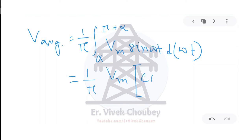This simplifies to V_average = (2Vm/π) · cos α, because cos(π + α) = −cos α, so cos α − (−cos α) = 2cos α.